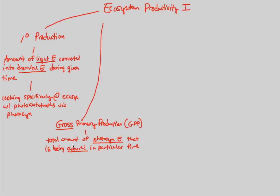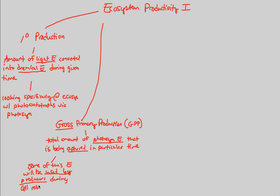When we say 'captured,' we're asking how much of the energy being turned from light energy into chemical energy — into photosynthetic energy — is actually being converted. We know the conversion rate is about 1%. But of that 1%, we have to remember that some of this energy will be used by producers during their own cellular respiration.